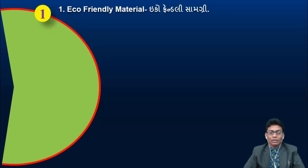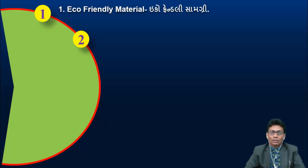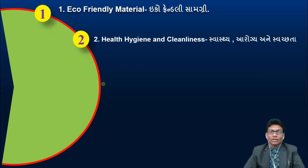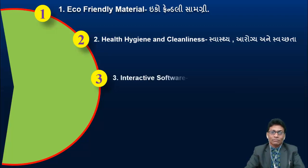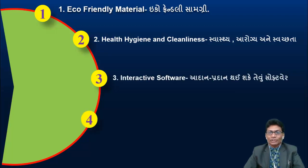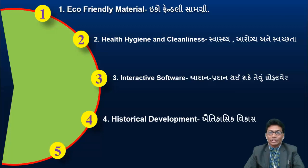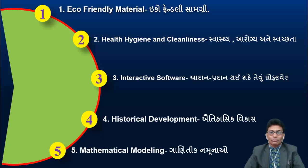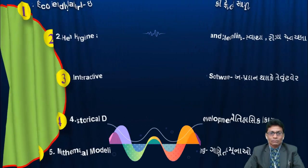Top 5 - in the Science and Environment Exhibition, there are 5 divisions. Any student can participate in any one division. Division 1 is Eco-Friendly Material. Division 2 is Health, Hygiene and Cleanliness - Swasthya Arogya. Division 3 is Interactive Software - software that enables exchange of information. Division 4 is Historical Development - Aitihasik Vikash. And Division 5 is Mathematical Modeling - Ganitik.